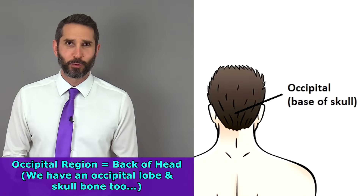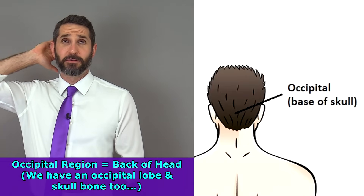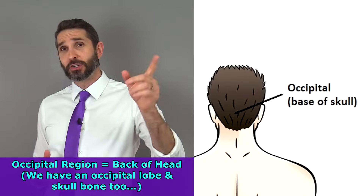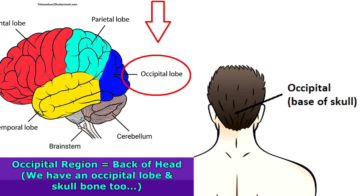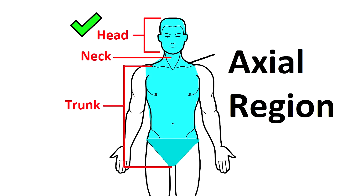The occipital region is at the back or base of the skull. Interestingly, you also have an occipital lobe of the brain back there and an occipital bone of the skull — do you see how anatomy connects all of this? Neither do I, but hopefully that'll help you remember.